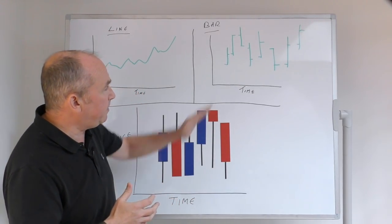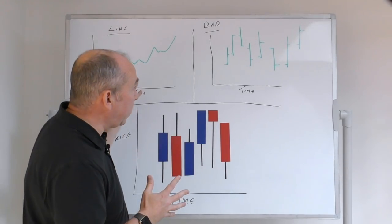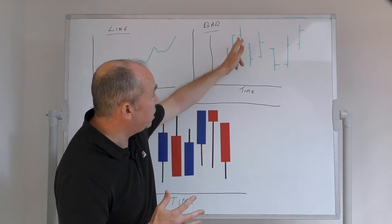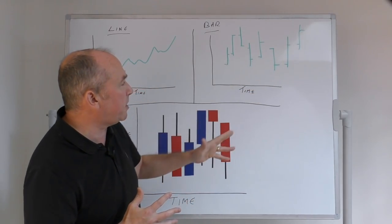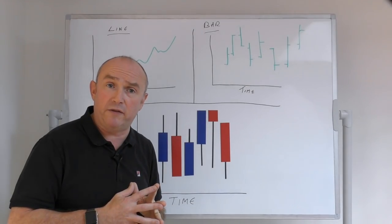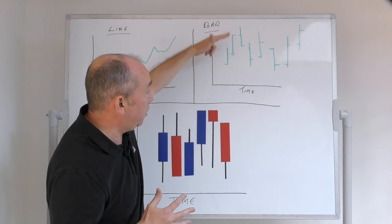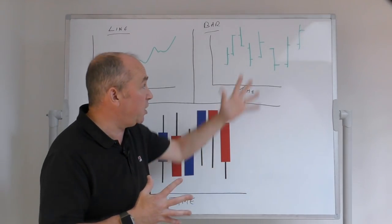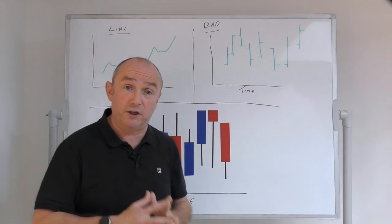Then you've got the bar chart, which shows you a bit more information than the line chart. It shows you where the market opened and where it closed, giving you a picture of where the market is going. It also shows price extremes — highs and lows. However, I find it a little bit hard sometimes to actually predict trend by looking at that, but of course that is a matter of preference.